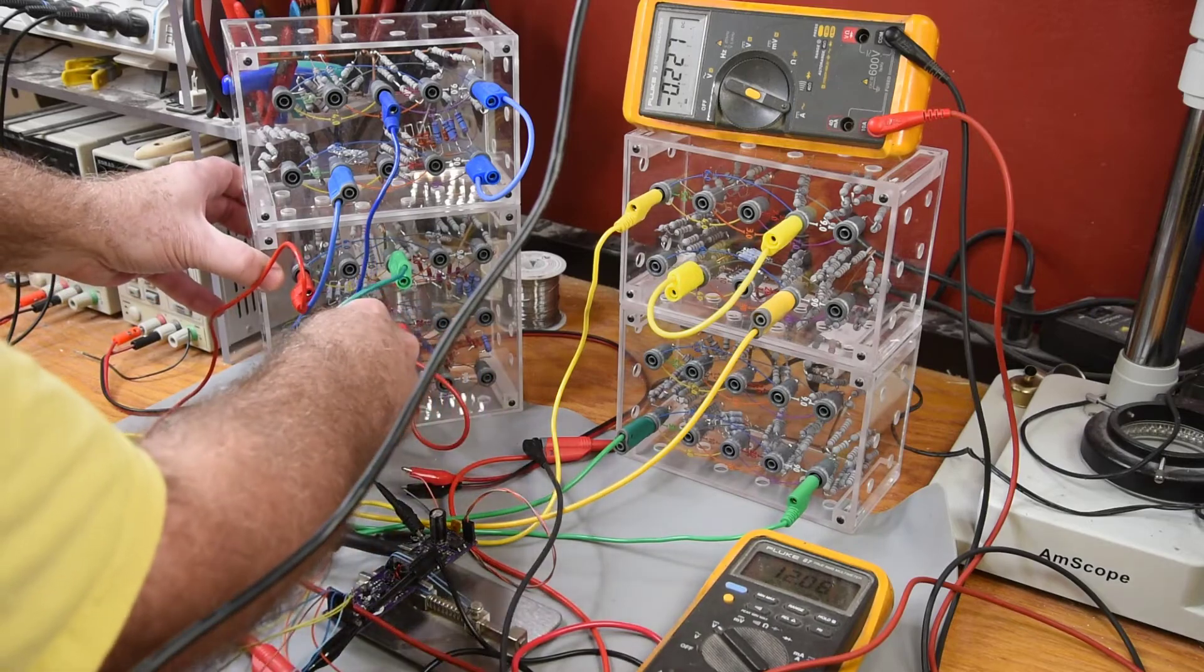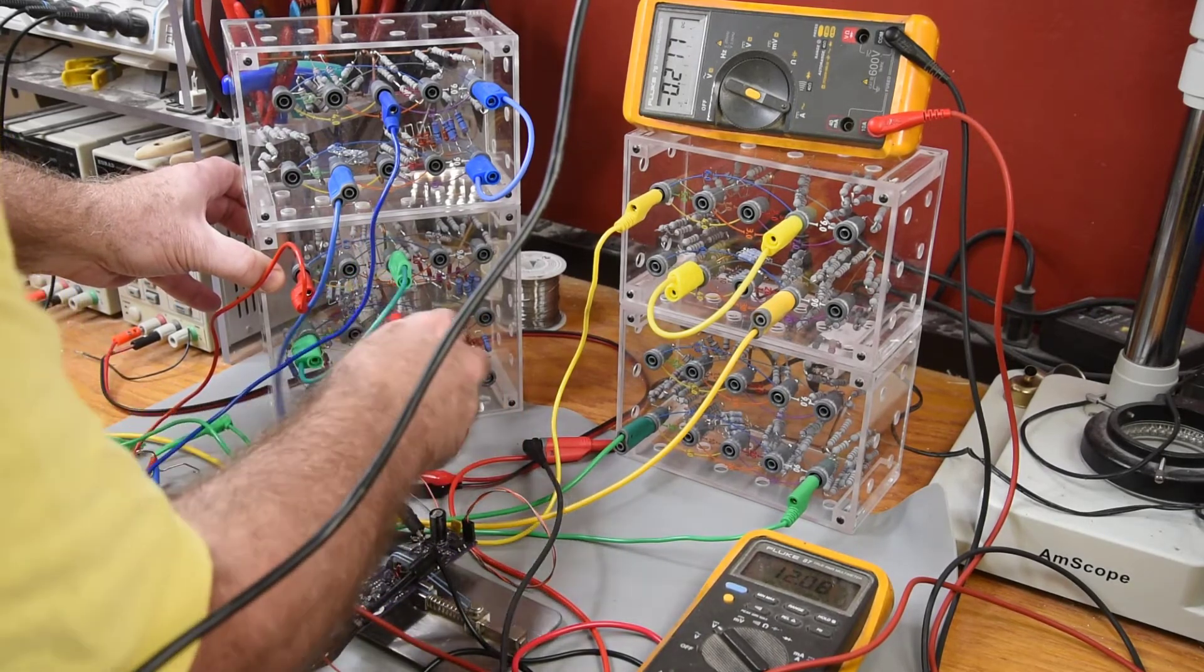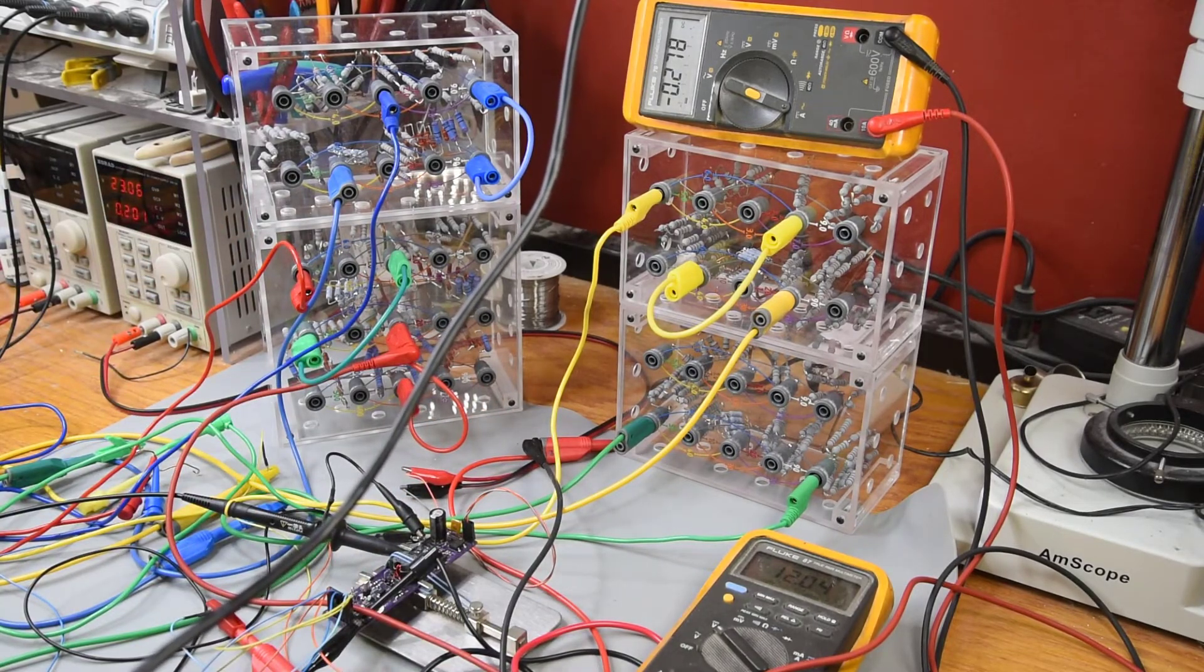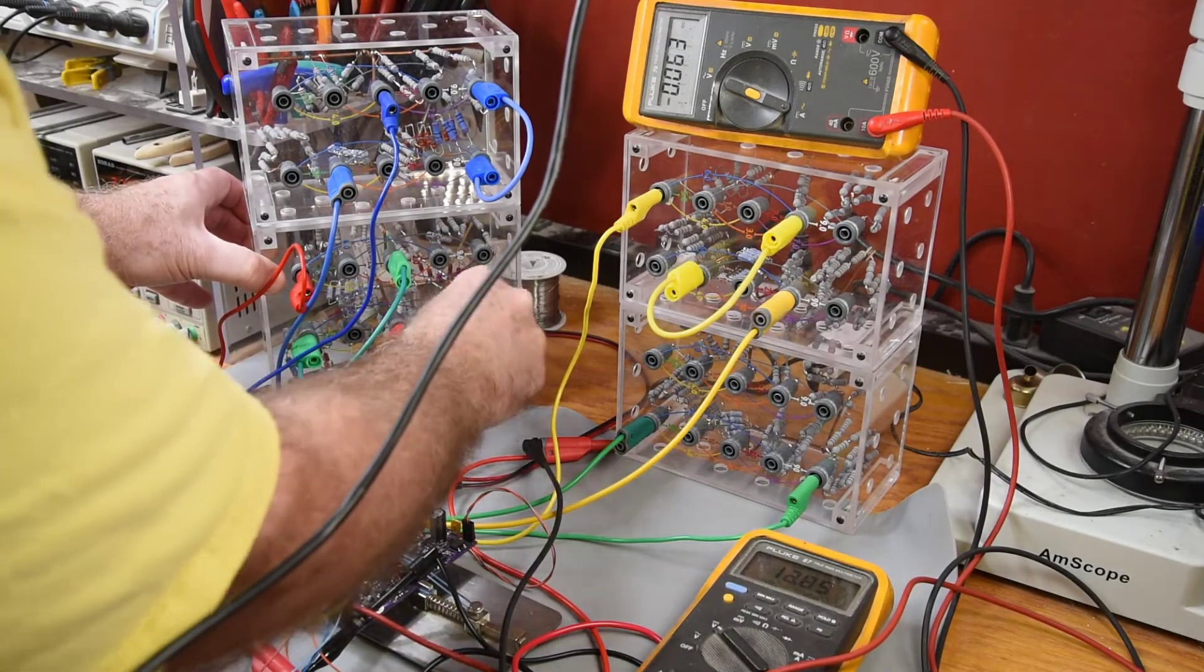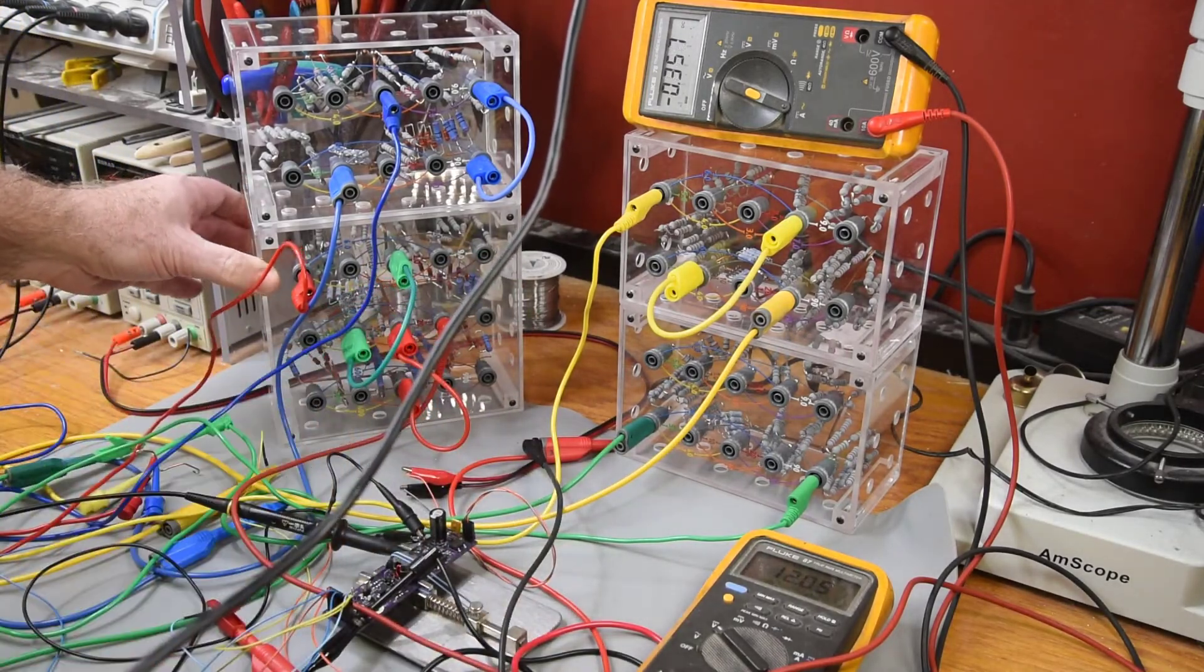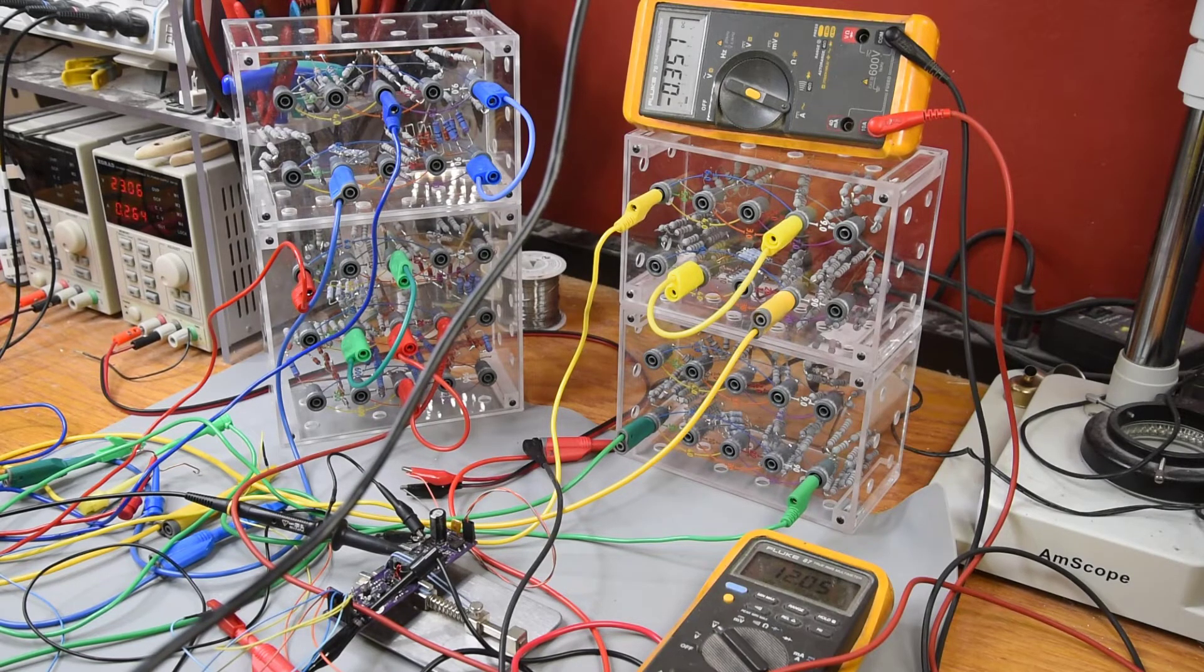After using the load boxes a bit, I'm pretty happy with them. I haven't really tested how much power they can handle. The box is made of acrylic. Acrylic is a pretty low melting point plastic. It also will burn. So maybe not the best case material for something that is going to get quite hot inside. I will get around to doing some power and temperature tests. But it's doing what I need it to do for now.